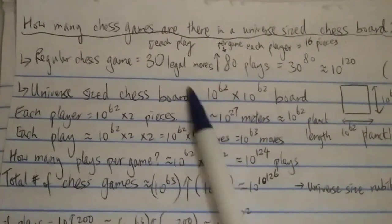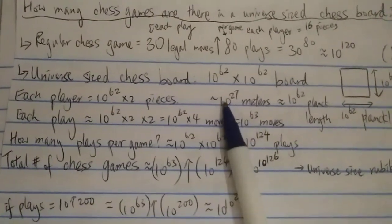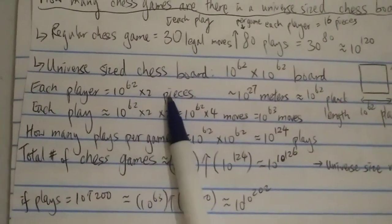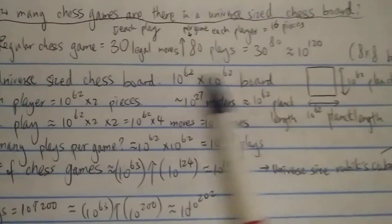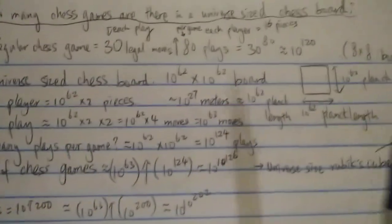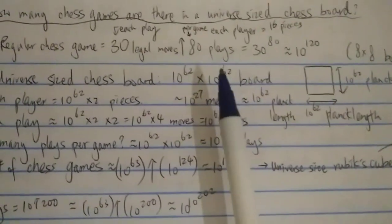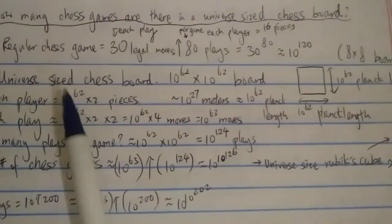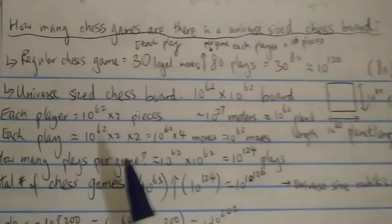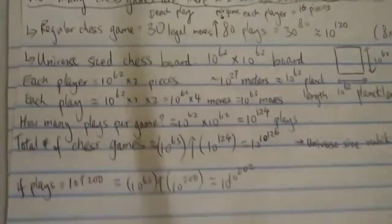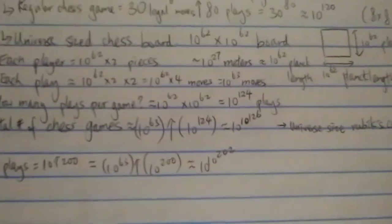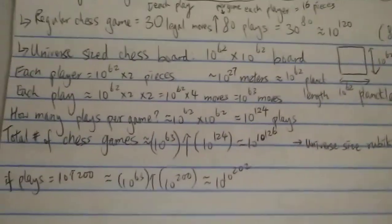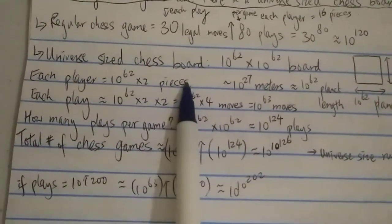Using the same approach as for the regular chess board: each player has around 10 to the 62 times 2 pieces, because in a regular chess game you have 8 times 2, so each player has 16 pieces. Here, since we have 10 to the 62 squares, the number of pieces is just times 2. This is just a rough estimate, so I'm not specifying exactly how many queens or knights there are.